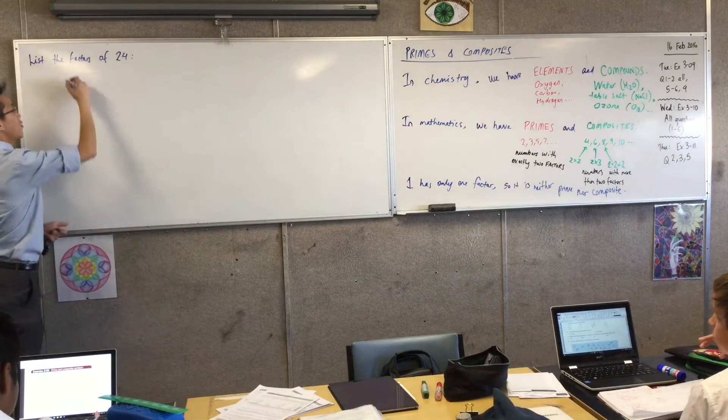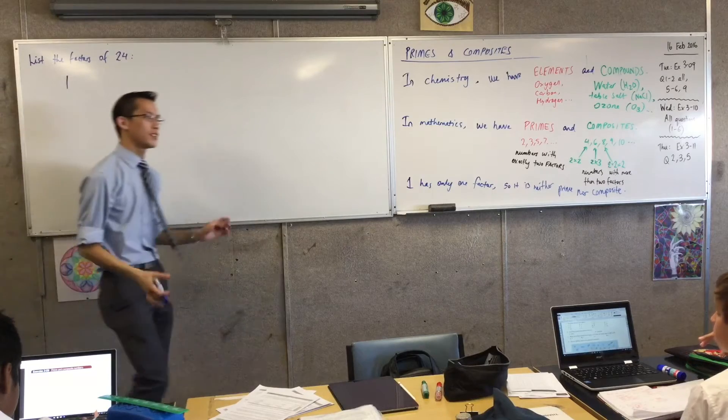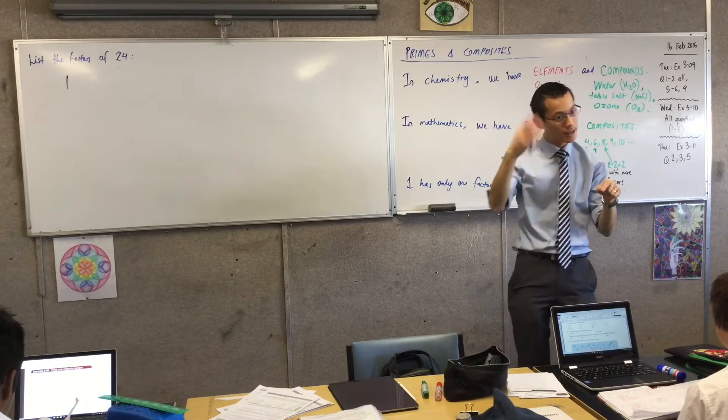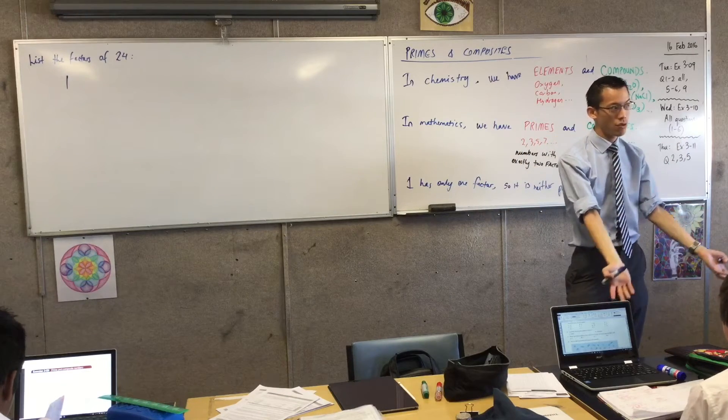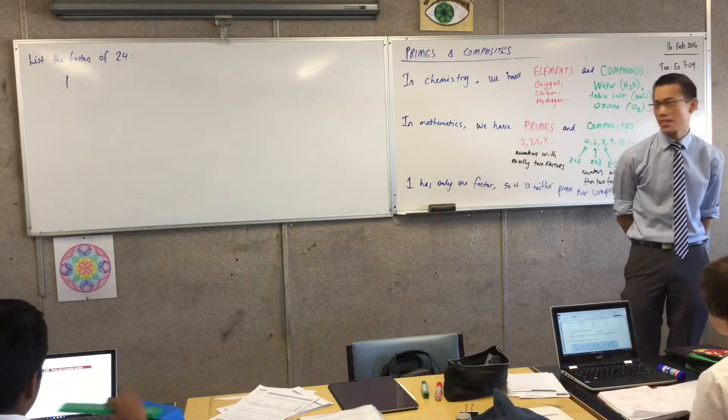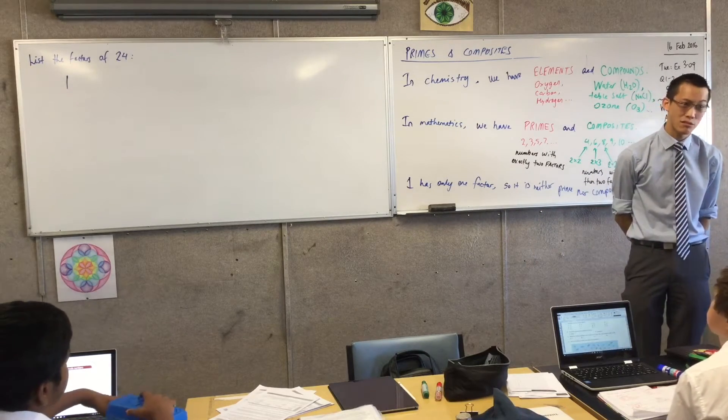Now, you can always start by saying 1, because every number can divide by 1. And then you start going through the numbers and dividing through mentally in your head, can I divide through without a remainder? Now, one of the questions people are asking me is, how do I know I've got all the factors? Like, do I have to check every single number?